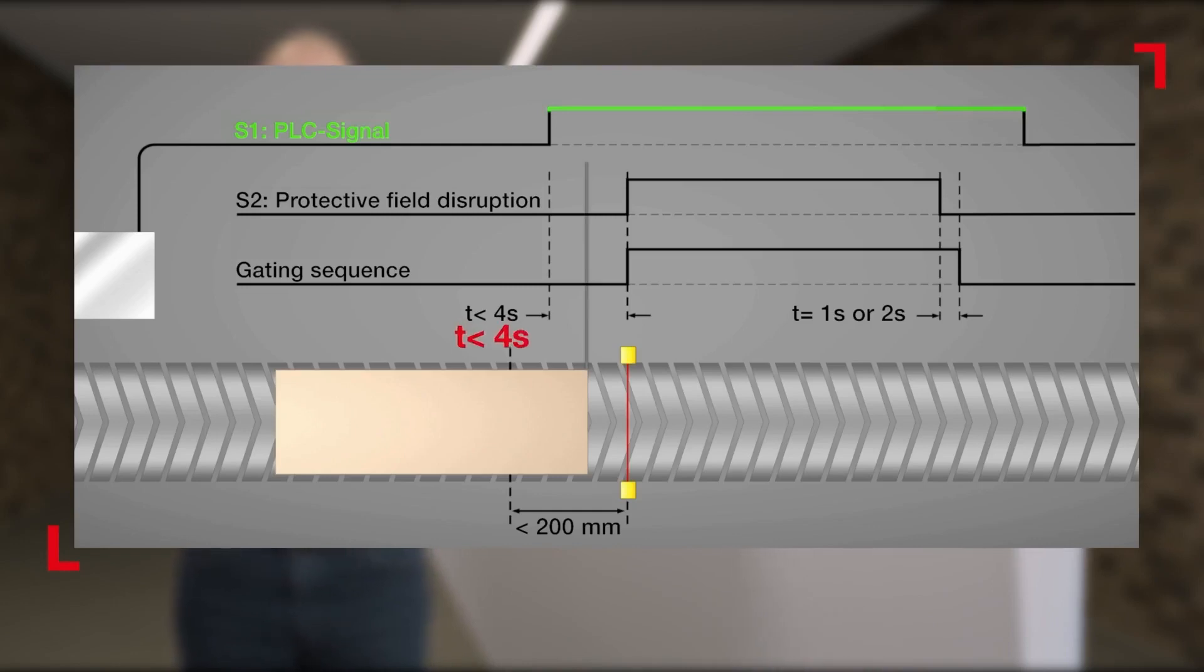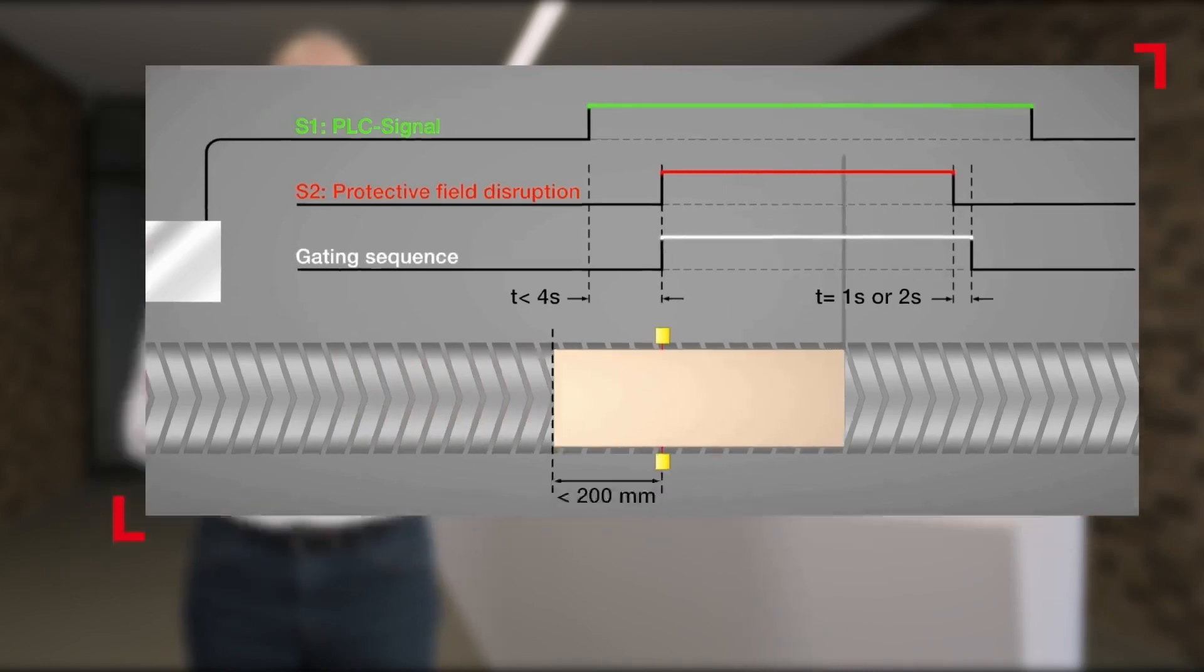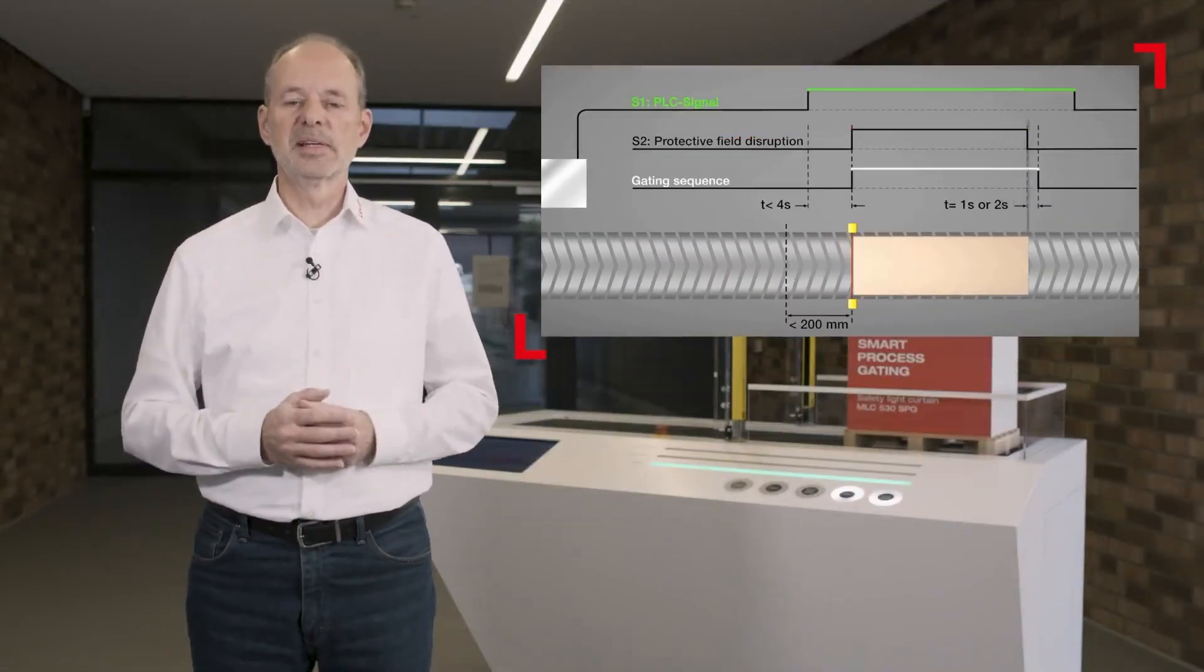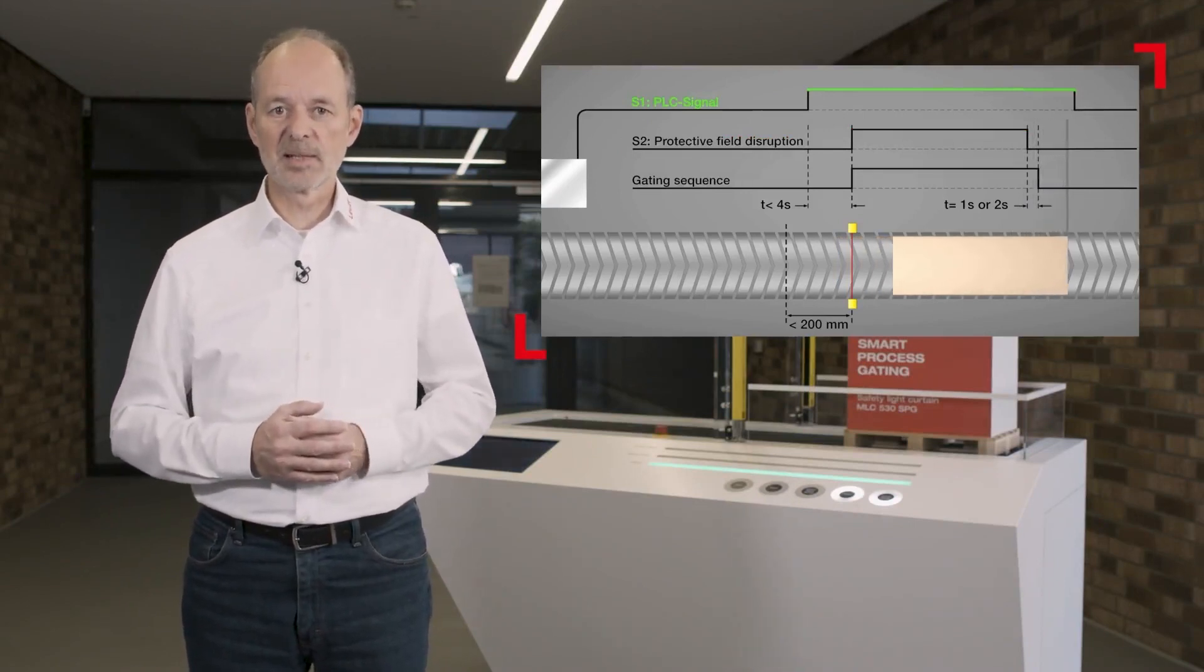In addition, the control signal must not exceed 4 seconds before reaching the safety light curtain to prevent issues. This is due to the safety light curtain being monitored in time. As soon as the transported goods reach the light curtain, the gating function is activated. The end of the gating is automatically set by time or by actively resetting the control signal.